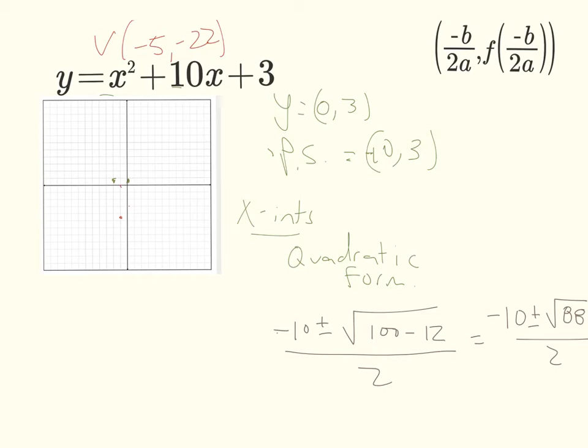And we're going to just round this a little bit to get our answer. Square root of 88 is approximately 9.4. So it's negative 10 plus 9.4 over 2, and that would give us X is equal to negative 0.3. And then we also have negative 10 minus 9.4 over 2, which would give us negative 9.7.